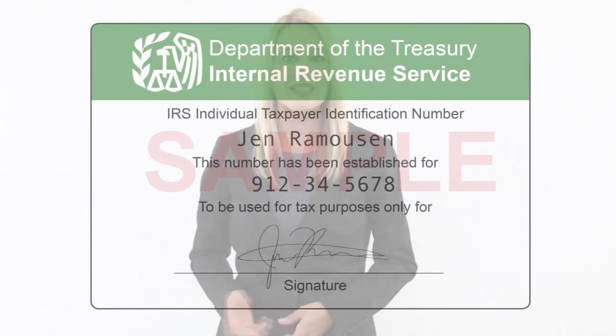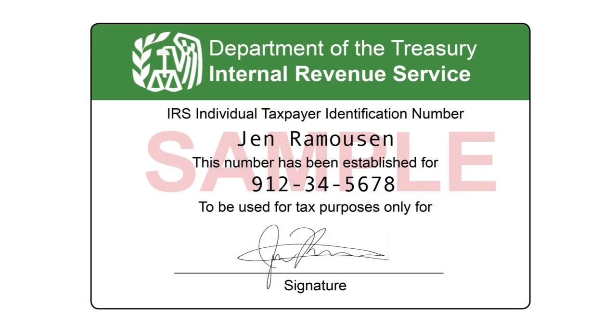It's used for administering tax laws, such as filing tax returns and opening a bank account. The TIN is either issued by the IRS or by the Social Security Administration. Taxpayer identification numbers are always a nine-digit number, beginning with the number nine, and they are formatted just like an SSN.